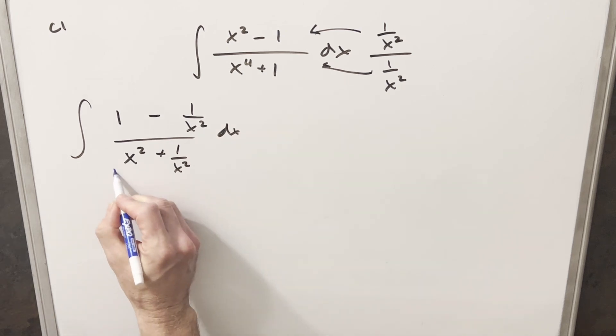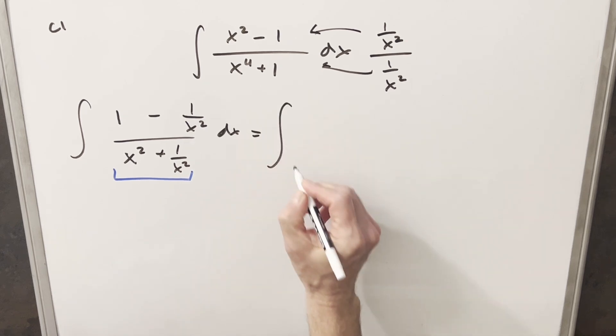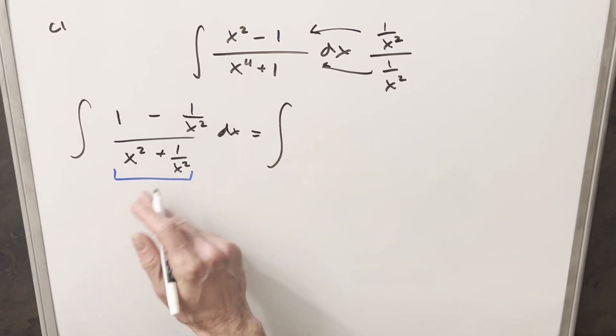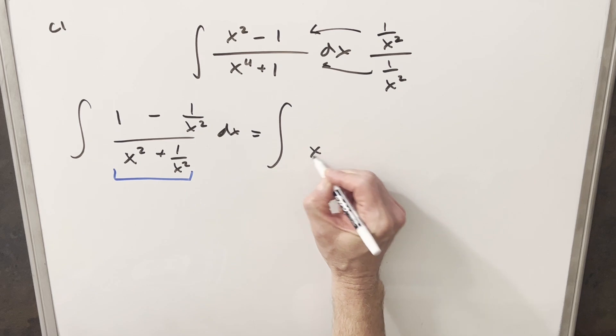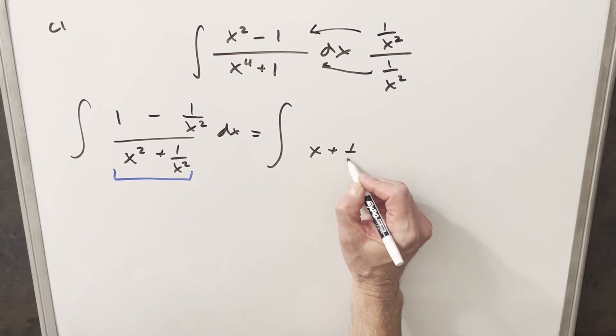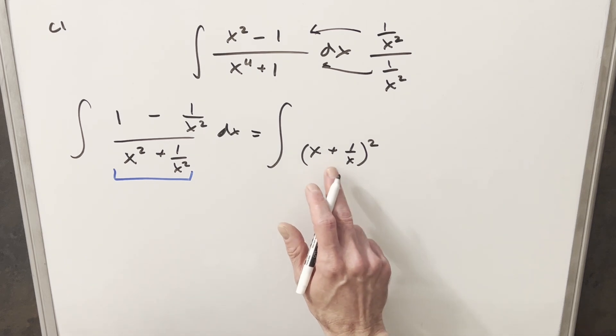Then from here what I want to do is just factor this thing. So let's just rewrite this. The way I want to factor this, there's two ways that I could factor this, but what I want to do is write it as x plus 1 over x squared. We could do this as x minus 1 over x, but I think this way it's going to work better.